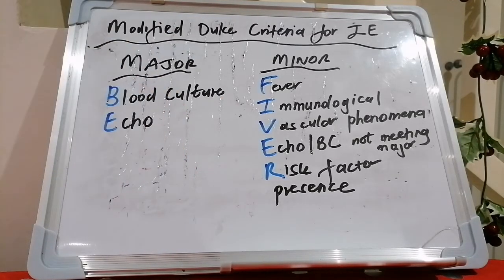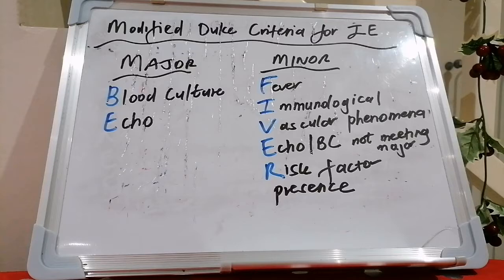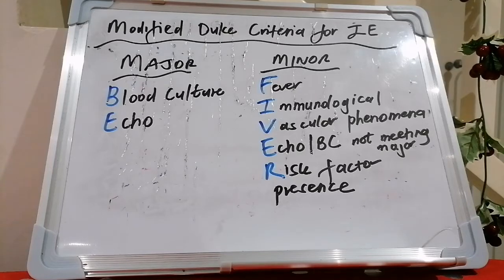Why are bacteria really bad at maths? Because they multiply by dividing. And what do you call a rude and isolated bacteria? Uncultured.